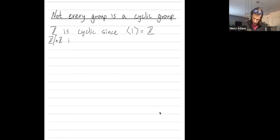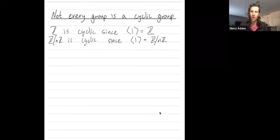Z mod nZ is cyclic for any integer n since also one generates Z mod nZ. The cyclic subgroup generated by one inside of Z mod nZ is all of Z mod nZ. And our last video showed that you have potentially more generators as well. Any number relatively prime to n is a generator of Z mod nZ.